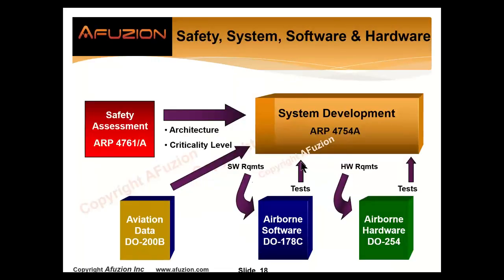aFusion uses this larger representation with audits and training to show where DO-200B fits. In aviation, we have a safety assessment at the aircraft level and the ground-based system level — CNS, ATM, air traffic control, communications. That determines the architecture, criticality levels, or development assurance level (DAL). Then there's an aircraft and system development process, ARP 4754. DO-200B data is prepared on the ground, used on the ground, and used in the air.